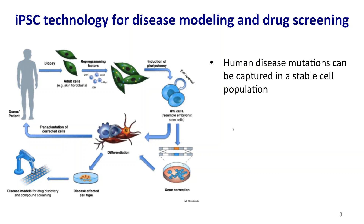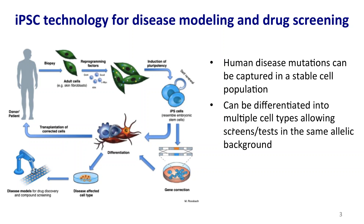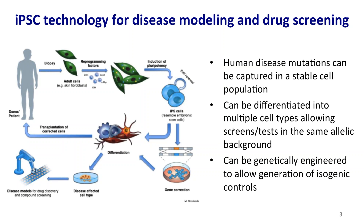One apparent advantage is that you can capture disease mutations of human origin in a stable primary cell line. You can differentiate the cells into multiple cell types — for example, both neurons and astrocytes — so that your screen and tests can be done in the same allelic background. You can also genetically modify them to generate isogenic controls.